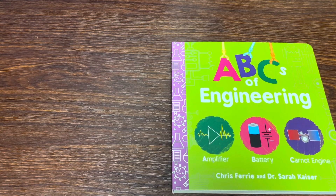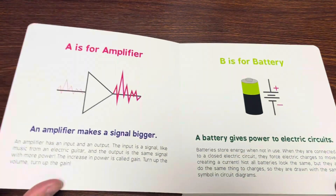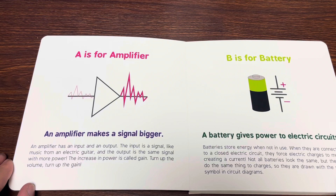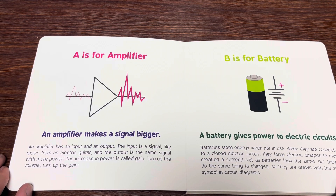ABCs of engineering. A is for amplifier. An amplifier makes a signal bigger.